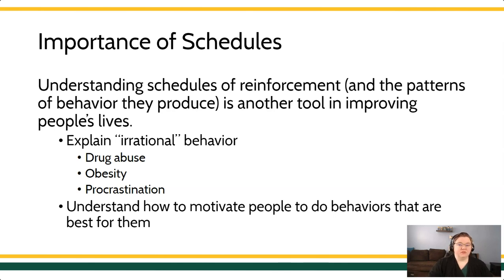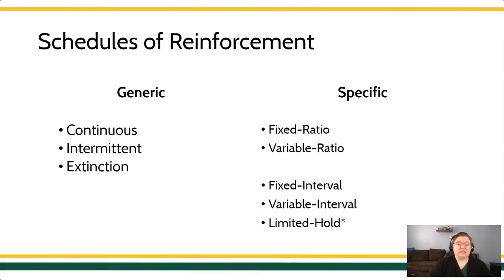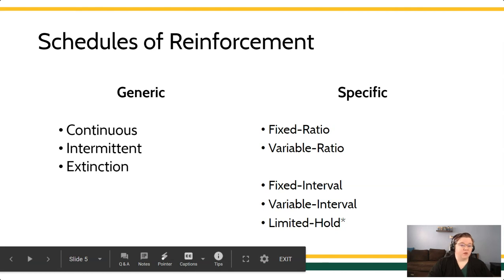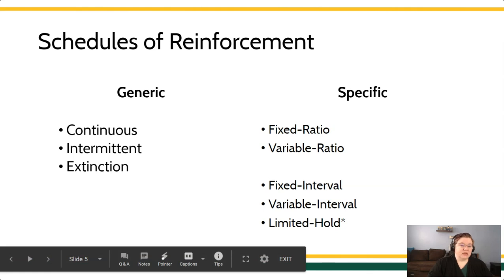When we talk about schedules of reinforcement, we have categories we describe schedules as. We can talk in a very generic way: continuous reinforcement, intermittent reinforcement, or extinction. We've previously introduced extinction as a clinical procedure, but extinction also refers to a schedule where no reinforcers are delivered. We can also talk about schedules in a very specific way — fixed or variable ratio schedules, fixed or variable interval schedules, and even an advanced concept known as limited hold.